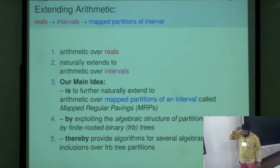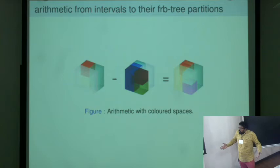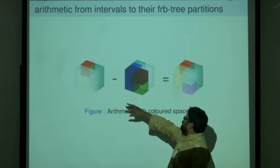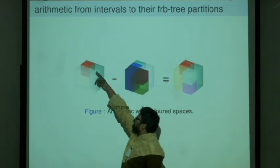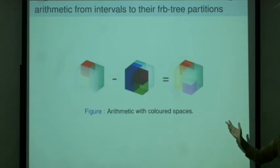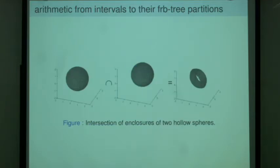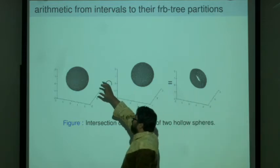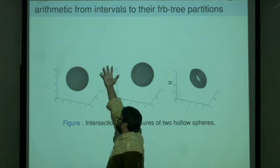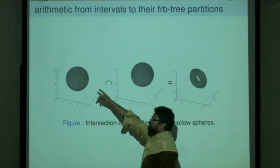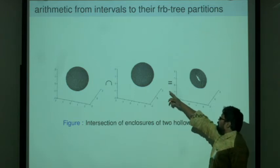So this is extending arithmetic. Arithmetic over reals. There is a natural extension of that to arithmetic over intervals. And then our main idea is to further naturally extend to arithmetic over mapped partitions of an interval called mapped regular pavings. We want to do this by exploiting the algebraic structure of partitions formed by finite rooted binary trees, FRB trees. And thereby provide algorithms for several algebras and their inclusions in the Neumeyer sense, Arnold Neumeyer sense that he mentioned in the history of interval.